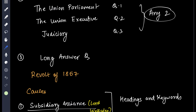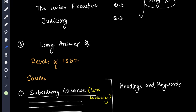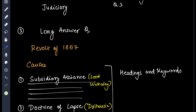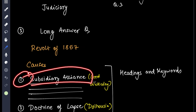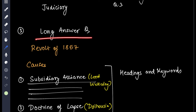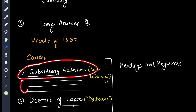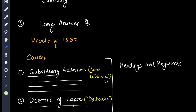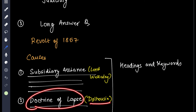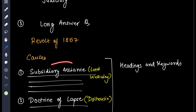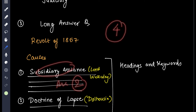Then we come to long answer questions. Whenever you are answering a question, you have to mention the heading first. For example, if the question is 'Causes of the Revolt of 1857,' mention the heading first and then write the explanation. You can include keywords like Lord Wellesley, Doctrine of Lapse, and Vidal Housie. You will get marks from the keywords. Answer in two lines per point — don't write too much, because it's a 4-mark question.